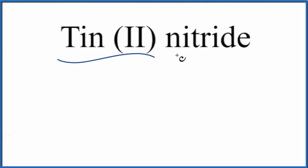To write the formula for tin(II) nitride, let's first write the element symbols. If you look up tin on the periodic table, it has an element symbol of Sn.